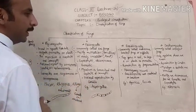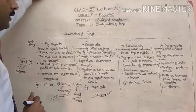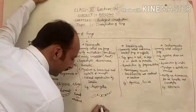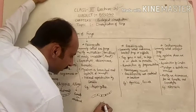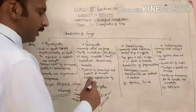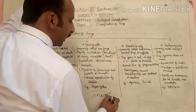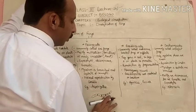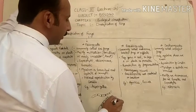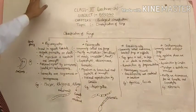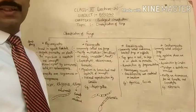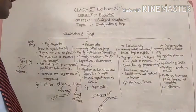Asexual reproduction in Ascomycetes occurs by conidia. Conidia are special structures somewhat like budding. Fungi belonging to Ascomycetes reproduce by conidia formation. An example is Aspergillus.